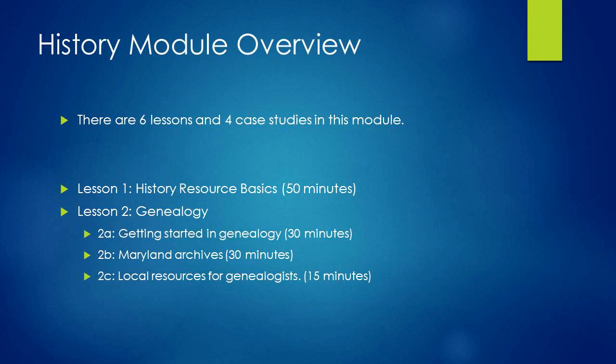Lesson two on genealogy has three sub-lessons: getting started in genealogy, Maryland archives, and local historical resources. In getting started in genealogy, we will look at the Enoch Pratt Free Library's Pathfinder on Genealogical Research and learn to use Sailor's HeritageQuest database to do a simple census search. Then we will take a close look at the Maryland archives, especially the Find Records tab, the History tab, and the Digital Resources tab. There's a lot on this site, so just get a sense of what's there. Finally, we will brainstorm with colleagues about local historical resources that may be of interest both to genealogists and history buffs. After all this exploration, we will make some recommendations to Mr. Johnson to help in his new hobby.